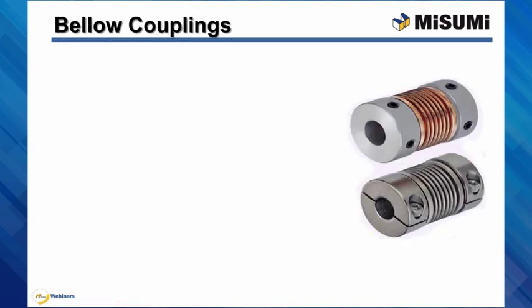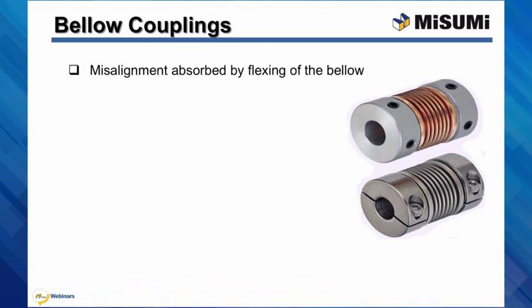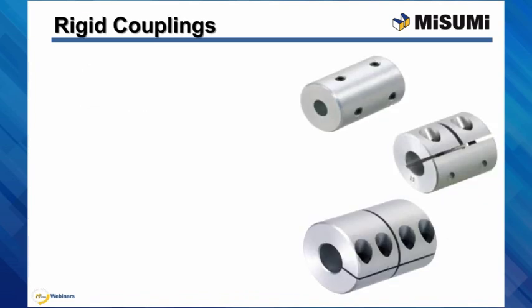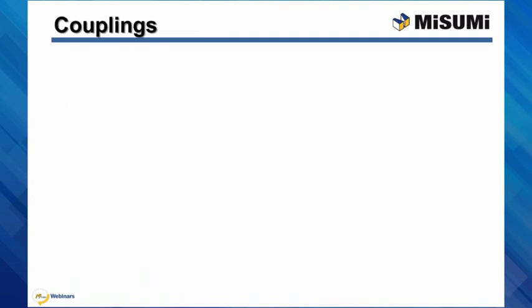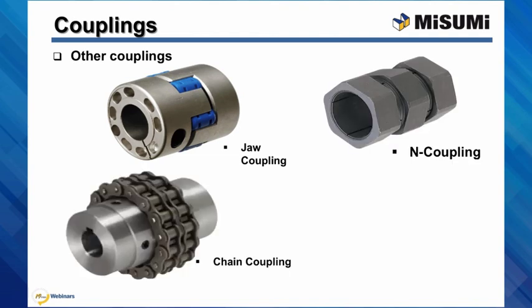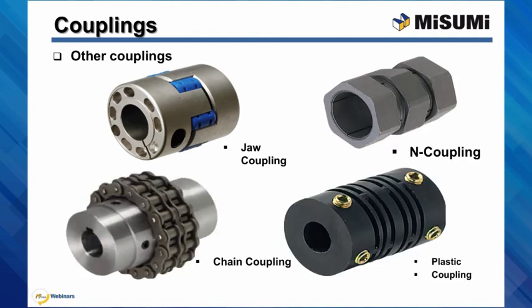Bellow couplings are made of two-piece construction that uses stainless steel and phosphorous bronze bellow to connect the shaft hubs. Misalignment is absorbed by flexing of the bellow, with high moment of inertia and low backlash. Rigid couplings are one-piece solid construction made of aluminum alloys or stainless steel, allowing for high torsional rigidity and no backlash. Misumi also offers jaw, end, chain, and plastic couplings — more details on these can be found online or in the Misumi catalog.